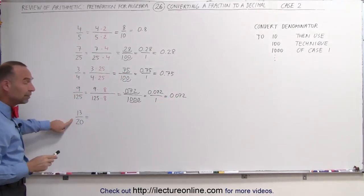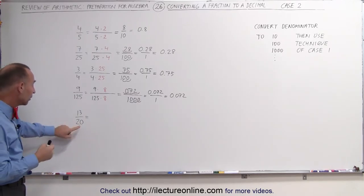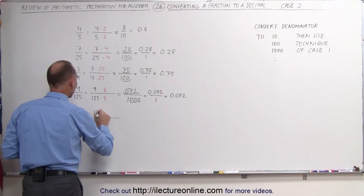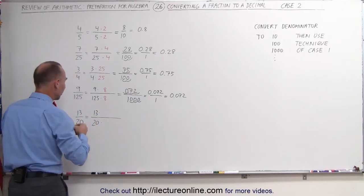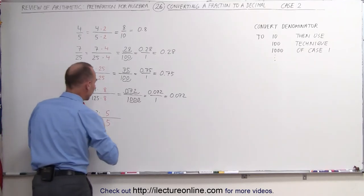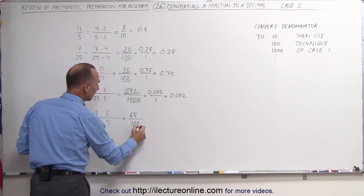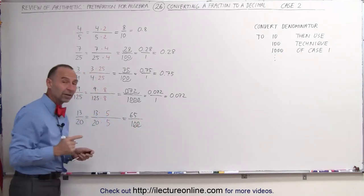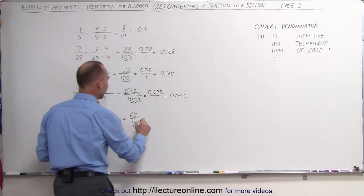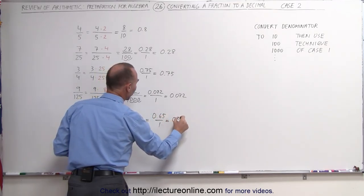Finally, now that you know the technique: here you can see that 20 fits evenly into 100 — exactly 5 times — which means we're going to multiply the denominator times 5, and then multiply the numerator times 5 as well. The numerator becomes 65 and the denominator becomes 100. You move the decimal place over twice in the denominator, and twice in the numerator, and this becomes 0.65.